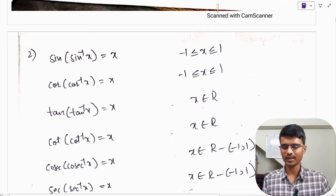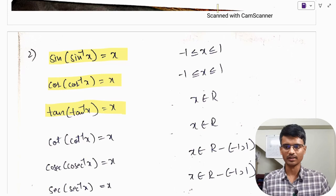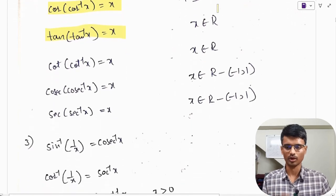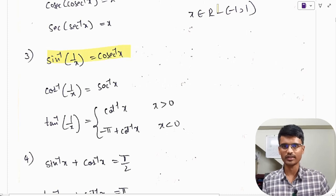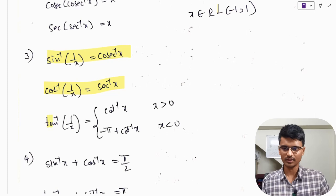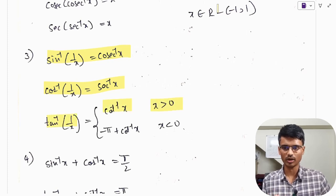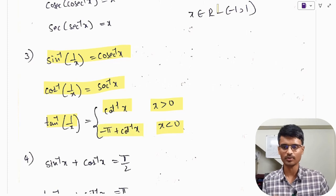Also: sin(sin⁻¹x) = x, cos(cos⁻¹x) = x, tan(tan⁻¹x) = x, and so on. These important formulae also follow: sin⁻¹(1/x) = cosec⁻¹x, cos⁻¹(1/x) = sec⁻¹x. For tan⁻¹(1/x): when x > 0, it equals cot⁻¹x; but when x < 0, it equals −π + cot⁻¹x.